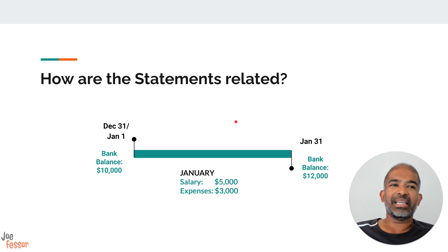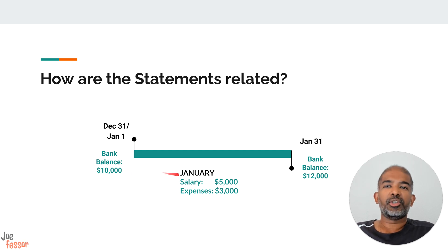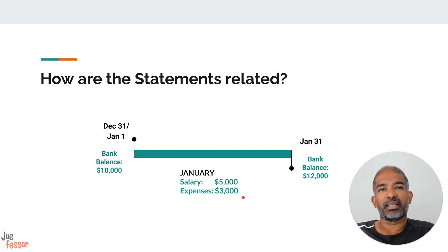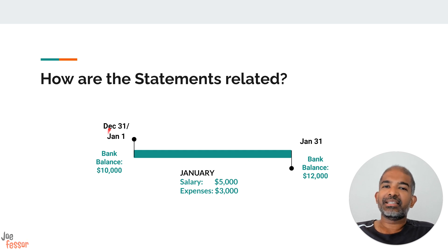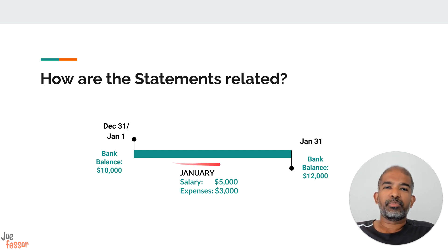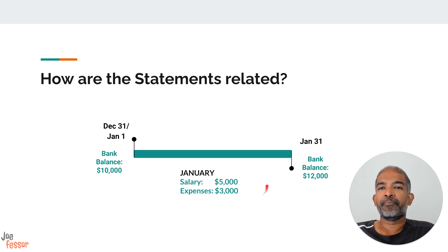Let's look at a simple example to see how these statements could be linked. Let's say at the beginning of a year, the balance in your account is $10,000. Assume that you make a salary of $5,000 during January and a summary of all your expenses amounts to $3,000 during that particular month. At the end of the month, you have $10,000 plus $5,000 equals $15,000 minus $3,000, leaving you with $12,000 at the end of January. The bank balance at the end of December or at the end of January is similar to what a balance sheet represents — it shows the balance of all the different accounts. What happens in between during January, where you earned $5,000 and had expenses of $3,000, is reflected in the profit and loss statement and also in the cash flow statement.